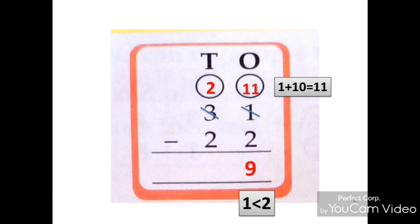Now subtract the 10's column. Numbers are 2 minus 2 which is equal to 0. Write 0 under 10's column. So the difference of 31 and 22 is 9.